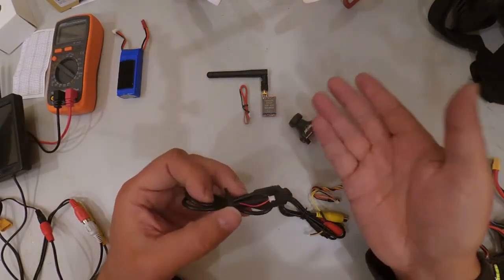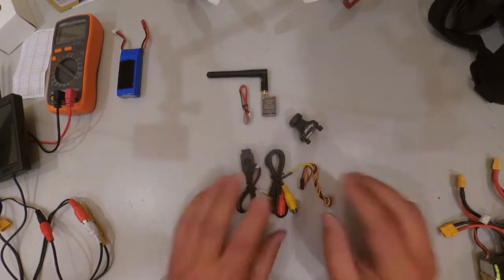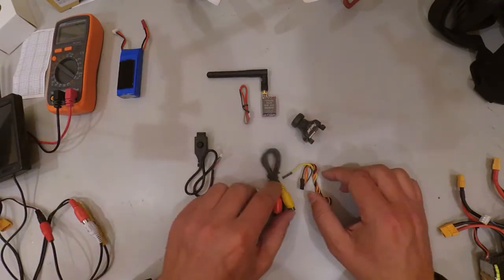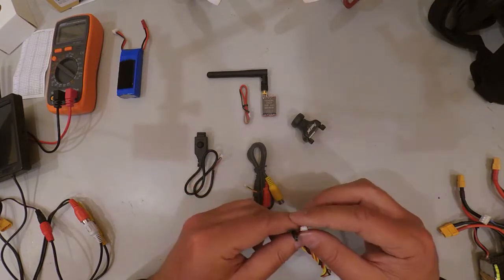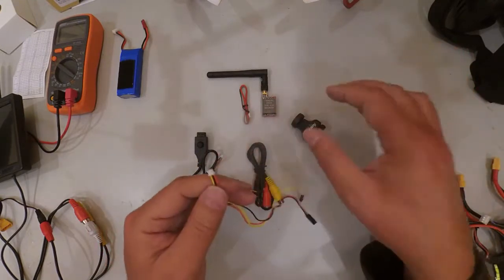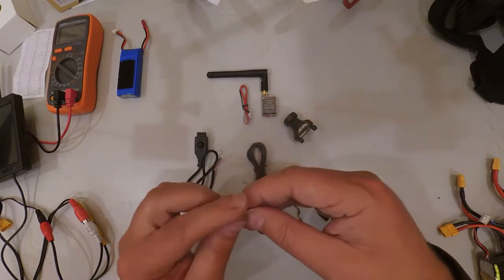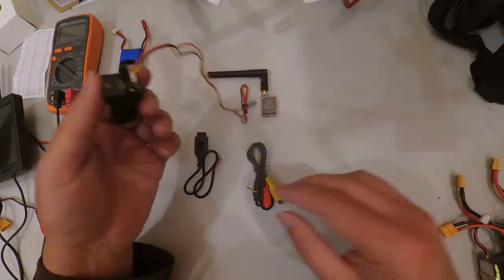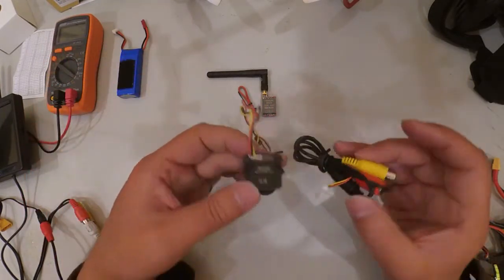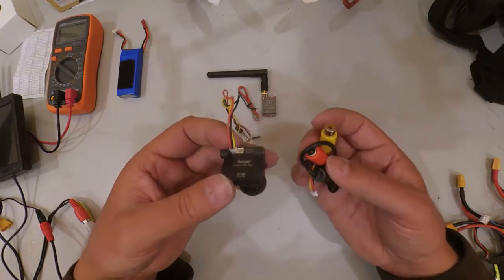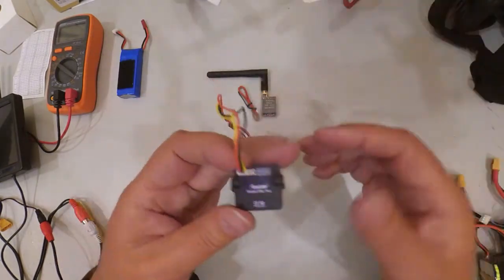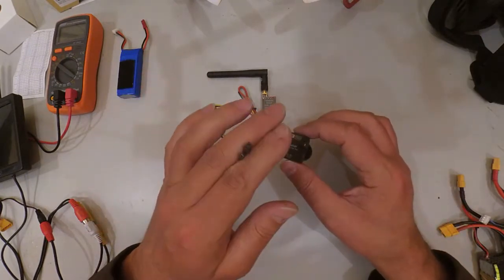When you order a Runcam Owl, you're going to get all these cables with it. When you order other cameras, it may come with different cables. However, there will always be a set of cables which include the audio-video cable. Audio may not always be required and in most cases these cameras don't even have a microphone.